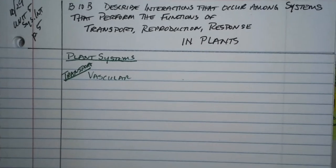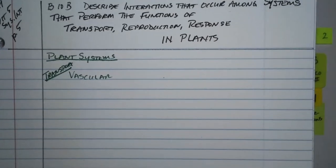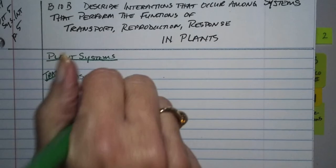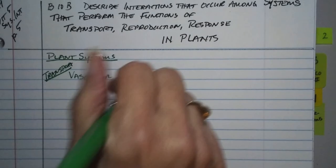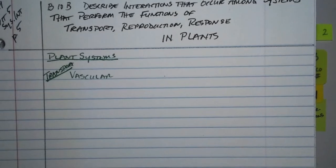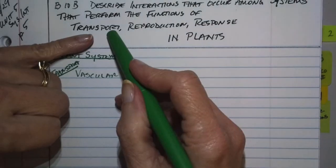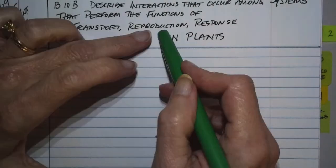So we're doing plant systems. We did plant systems — we just barely started this yesterday. We have plant systems, and there are three things they want us to talk about: transport, reproduction, and response. We're going to start off with transport.